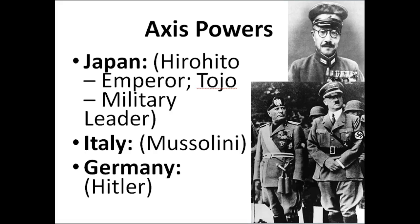It's helpful to know both sides fighting the war. On the Axis side we have Japan, led by Hirohito who is the Emperor, and Tojo who is their military leader. Italy is led by Mussolini and Hitler is the leader of Germany. At the beginning of the war they will also be supported by Stalin and the Soviet Union, but he of course switches sides in the middle of the war.